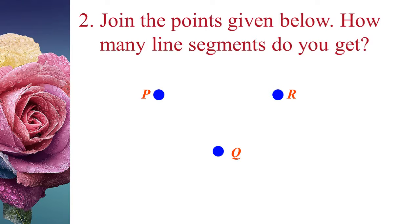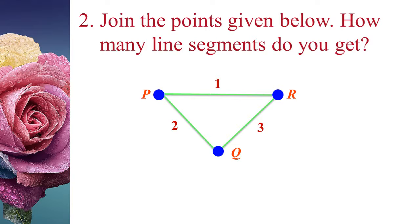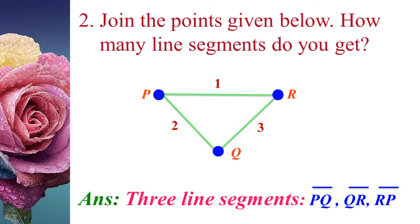The second problem: Join the points given below. How many line segments do you get? The given points are P, Q, and R. We join P and R, P and Q, and Q and R. Counting the line segments: the first is PR, the second is PQ, and the third is QR. Therefore, there are three line segments: PQ, QR, and RP.